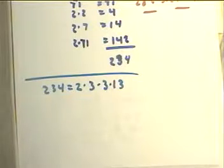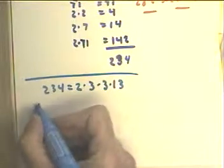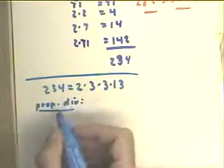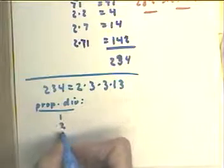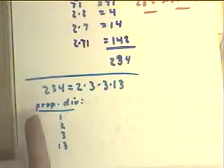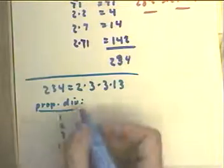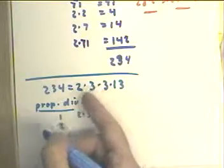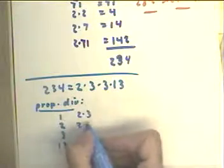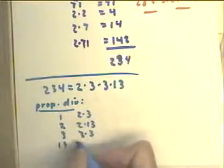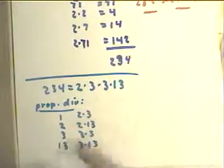Now, if you list the factors or the proper divisors, what do you get? You get 1, you get 2, you get 3, you get 13. Those are one-factor divisors. Then you get 2 times 3, and you can put 2 together with 13. Then you can put 3 with 3 and 3 with 13.